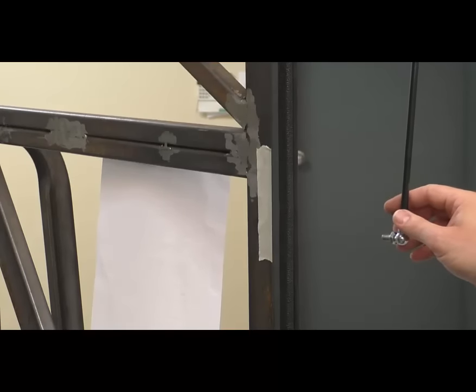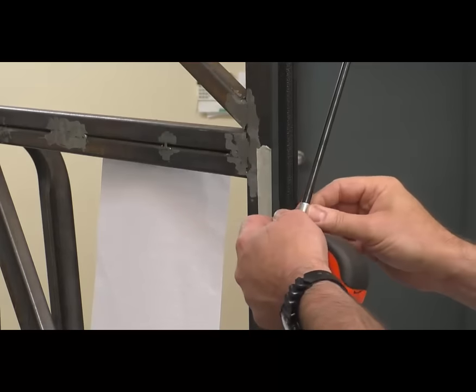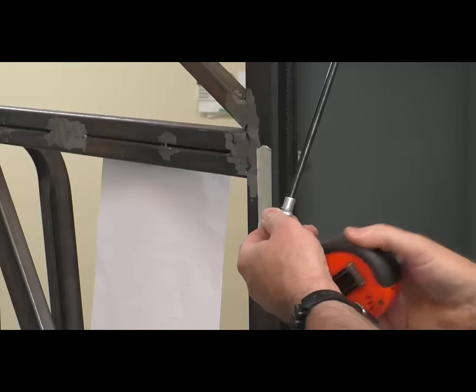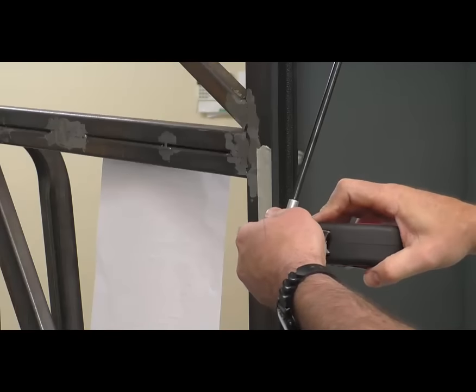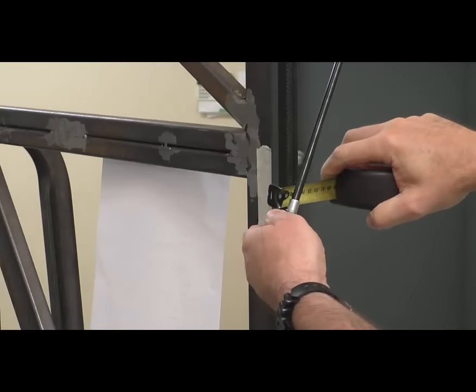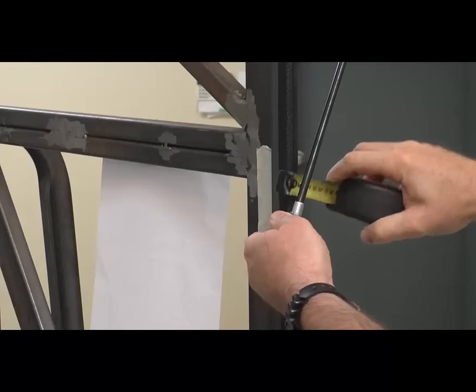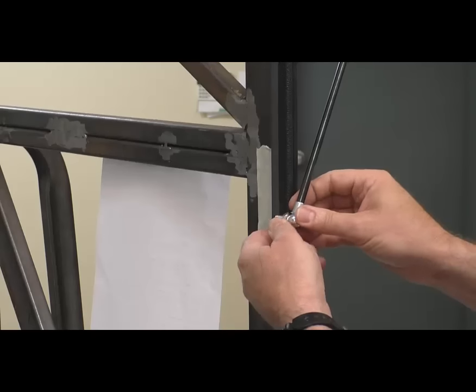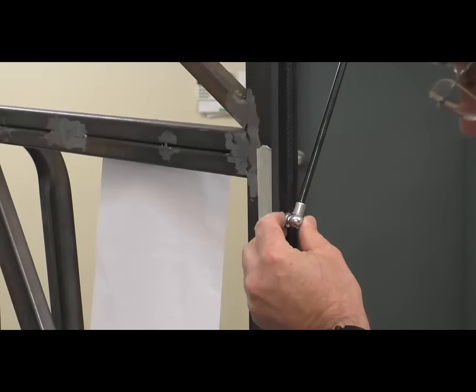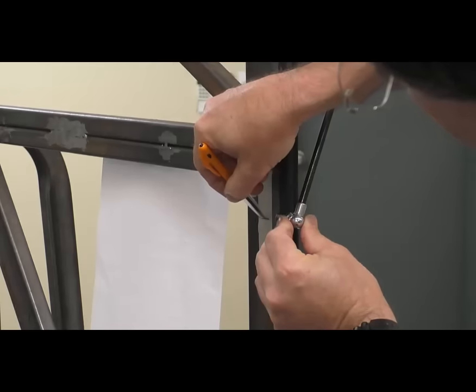The next thing we need to do is mount the bottom of the gas strut in the correct position. This will have a 25mm T dimension from the back of the door position, and we'll have to make up a bracket that's mounted in that position there.